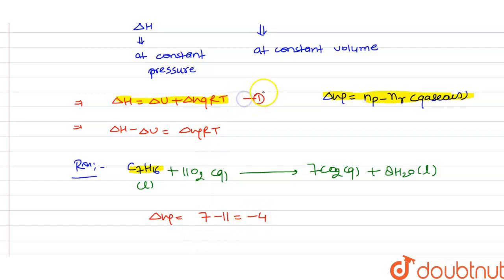So putting this value in equation second, we get delta H minus delta U is equal to minus 4 RT. So this is our required equation we are longing for.